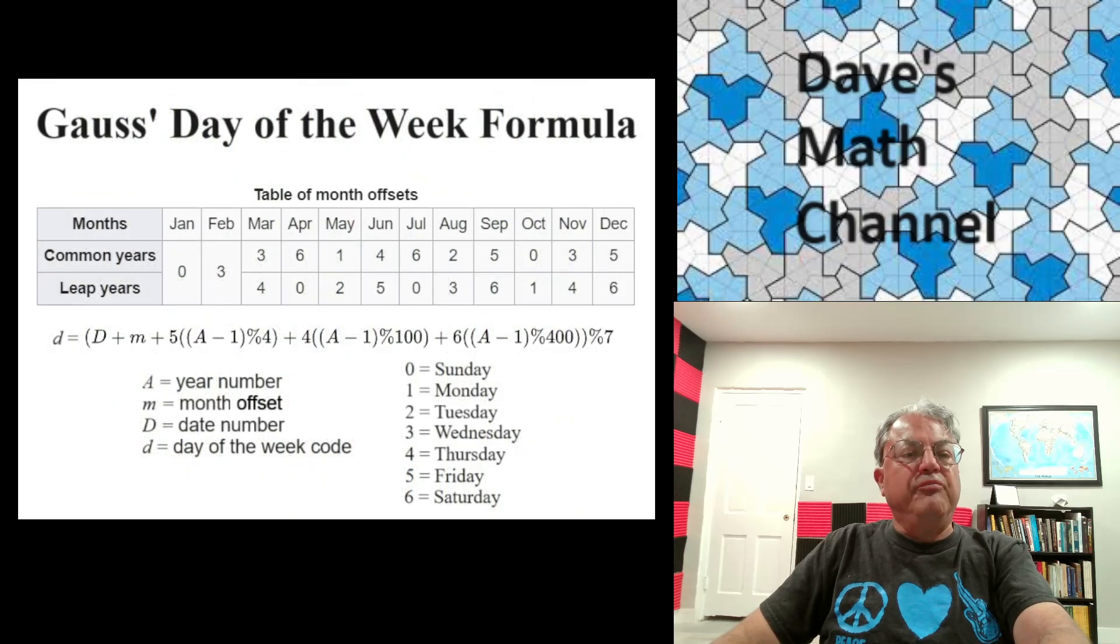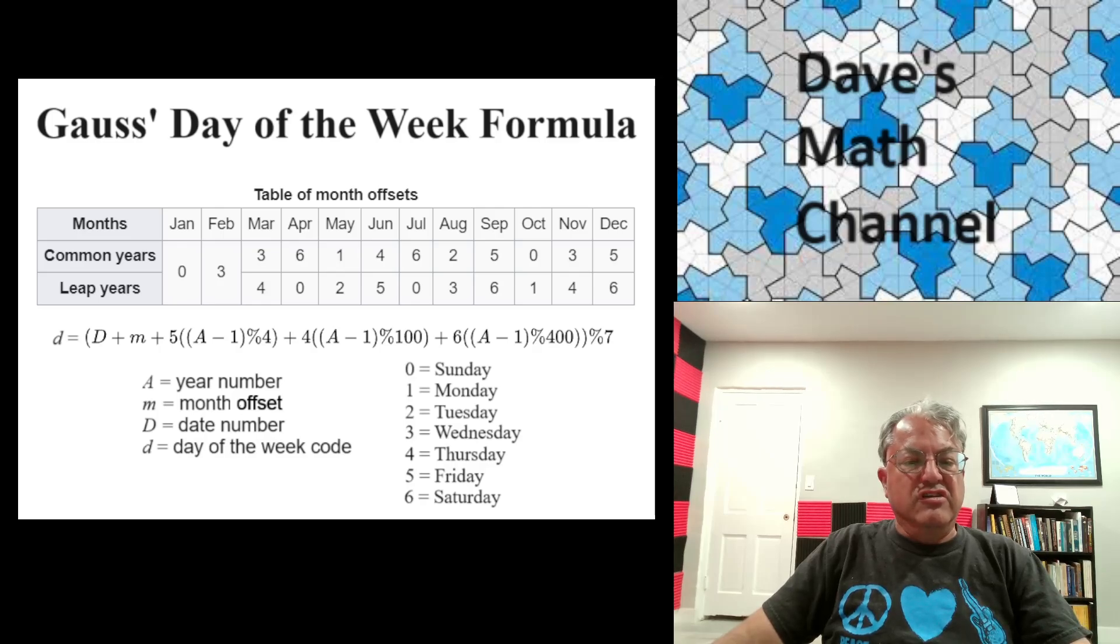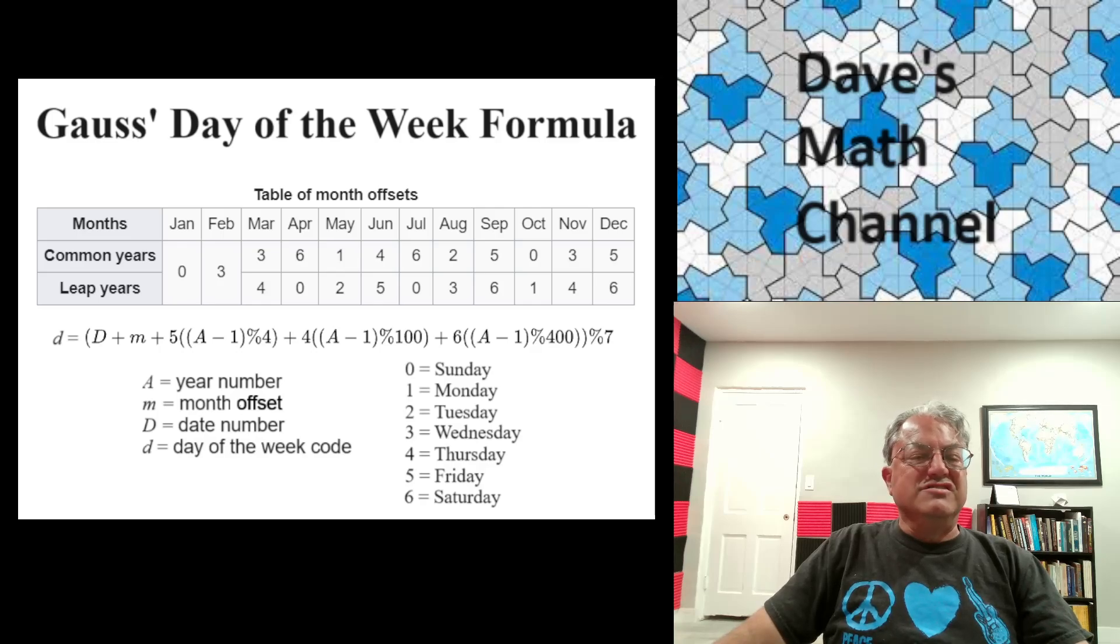And Gauss, Karl Friedrich Gauss, the great 19th century German mathematician, he came up with a nice formula for computing the day of the week, given any date, month and year from the Gregorian calendar. I guess it just has to be 1753 or later, so long as we're using that calendar, this formula should work. And as you can see, it's kind of a complicated formula, but it's not really that hard to use.